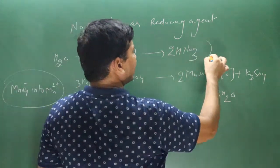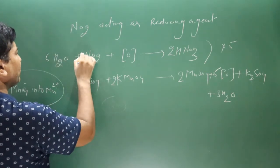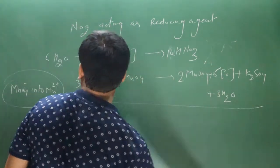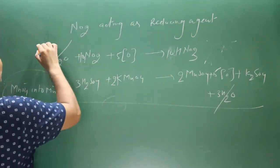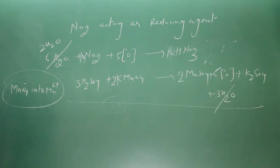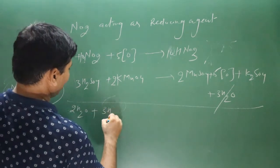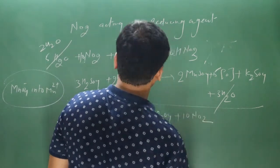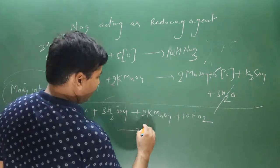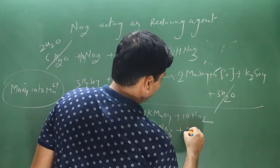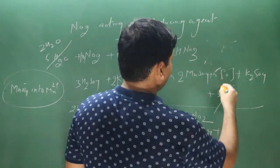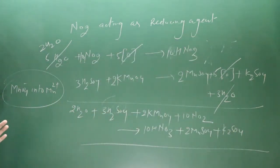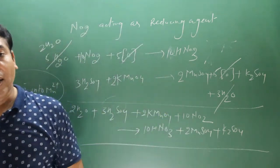In the NO2 equation, 1 nascent oxygen multiplied by 5 gives 5NO2 (5×2=10) and 5NO. After adding and cancelling, the final equation: 2H2O + 3H2SO4 + 2KMnO4 + 10NO2 → 2MnSO4 + K2SO4 + 10HNO3. This is a lengthy but systematic reaction.